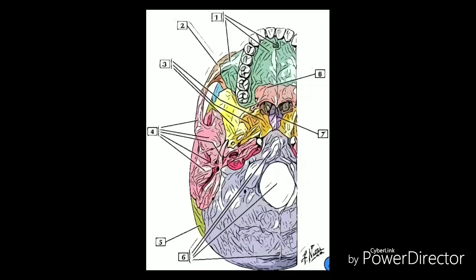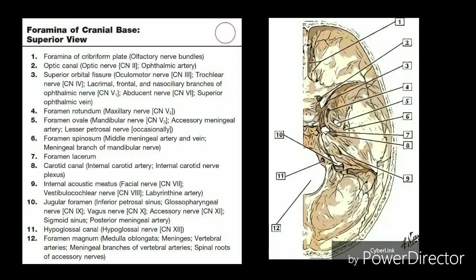The greater wings form the floor of the middle cranial fossa that houses the frontal lobes and pituitary gland, and also the posterior wall of the orbit. The lesser wings project laterally and form the floor of the anterior cranial fossa and the superior orbital fissure, through which several key optical nerves pass.